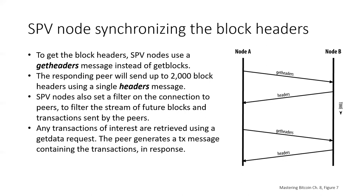SPV nodes also set a filter on the connection to peers to filter the stream of future blocks and transactions sent by the peers. Any transactions of interest are retrieved using a get data request, and the peer generates a transaction message containing the transactions in response. Because SPV nodes need to retrieve specific transactions in order to selectively verify them, there is a potential privacy risk. Unlike full blockchain nodes which collect all transactions in each block, the SPV node's request for specific data can inadvertently reveal the addresses in their wallet. A third party monitoring a network could keep track of the transactions requested by a wallet and use those to associate Bitcoin addresses with the user of that wallet, reducing the privacy they have on the Bitcoin blockchain.